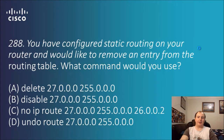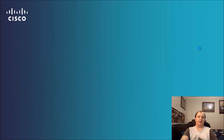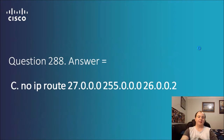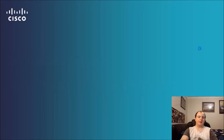Question 288: you have configured static routing on your router and would like to remove an entry from the routing table. What command would you use? Options include delete and disabled, no IP route, undo route with addresses. Looking at the earlier answers — lots of yes/no patterns — the correct syntax is C, no IP route, followed by the address, subnet mask, and address.